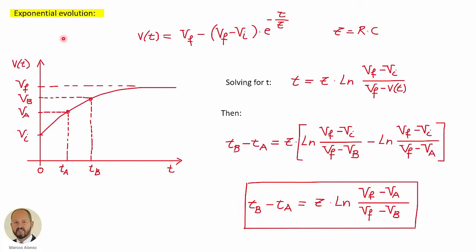Before continuing today, we are going to see very quickly how to obtain the difference in time of two points that are over an exponential evolution, as shown here. We have an evolution starting from an initial voltage V sub I and going to a final voltage V sub F, and we have two points: one for voltage V sub A and another for voltage V sub B. We want to obtain the time difference between these two instants. Let's see the equation that we need — this is the equation corresponding to the exponential voltage evolution.